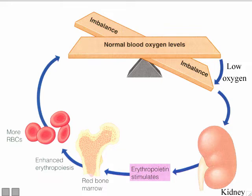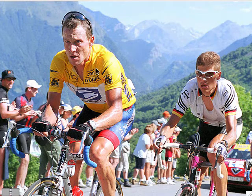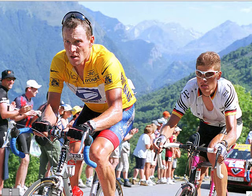Interestingly, erythropoietin can be used as a performance-enhancing drug. Lance Armstrong was famous for winning the Tour de France seven times, but it turned out he was taking illegal erythropoietin. That artificially boosted his red blood cell numbers so his blood could carry more oxygen, giving him an advantage. His trophies were taken away. The body can make erythropoietin naturally to boost red blood cell production from the bone marrow.